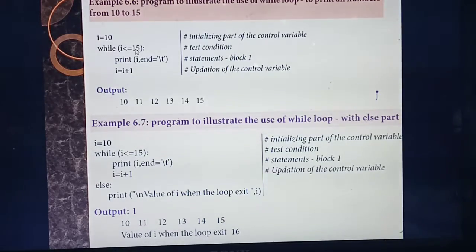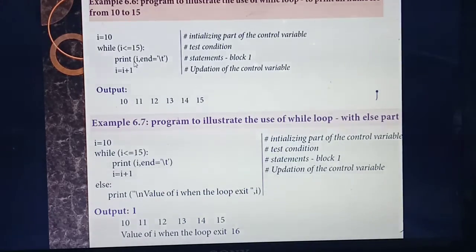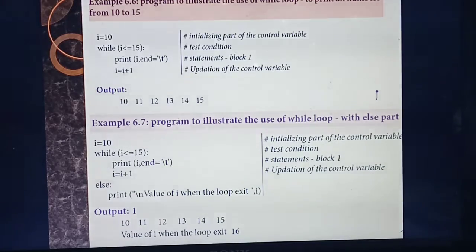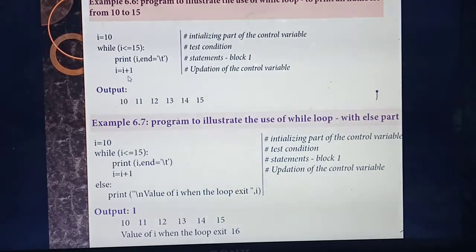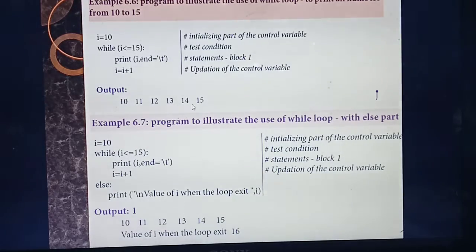When you run the program, how many values will you get? From 10 to 15 — that is: 10, 11, 12, 13, 14, 15. To print, you use `print(i)`. Between each number you leave a tab space using `\t`. Each iteration increments the value — first iteration prints 10, second prints 11, and so on till 15.